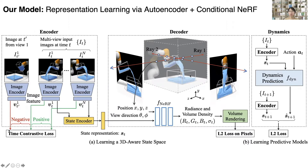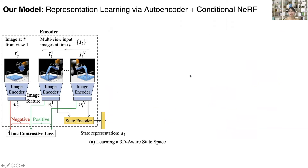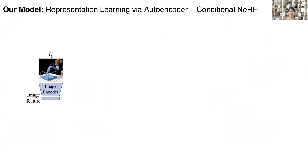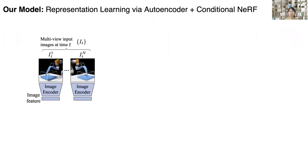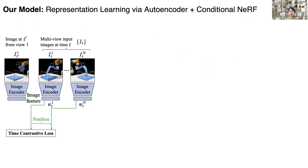Our model consists of three parts. In the left part, there is an encoder that maps visual observations into a latent scene representation. Given an input image, we first pass it to an image encoder to generate the image feature. We then extract features of images from the same time step captured by different camera viewpoints. To make the image features invariant to camera viewpoints, we use a time-contrastive loss to pull features of images from the same time step closer, while pushing features from different time steps farther apart.